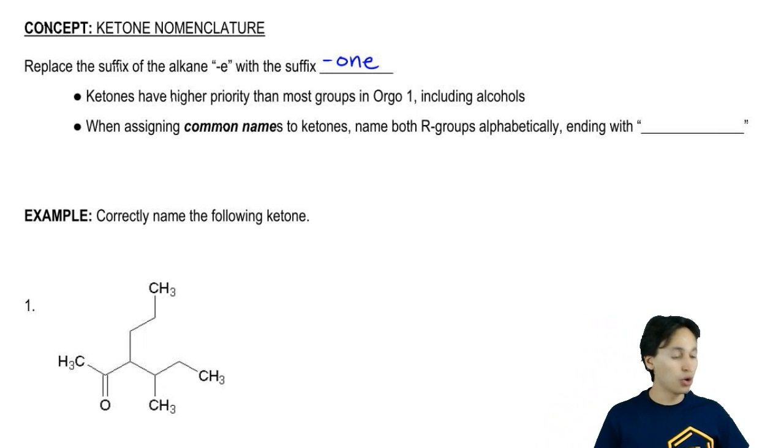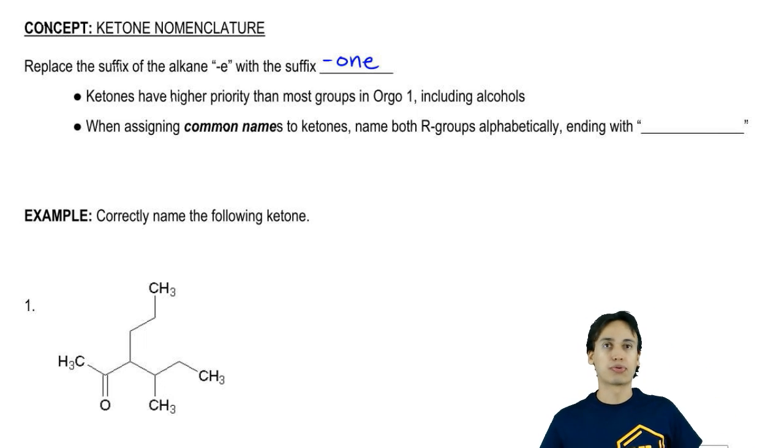Now guys, in this video, we're not going to discuss the prioritization of all functional groups in terms of numbering locations. But just suffice it to say that ketones are going to have higher priority than pretty much all the groups you learned in ORGO1, including alcohol.